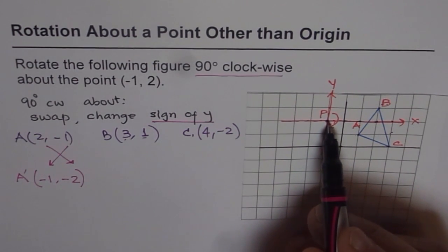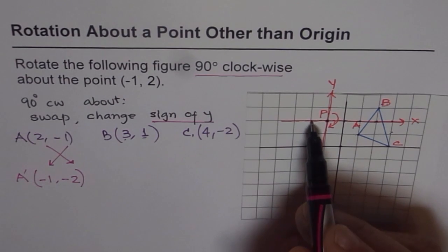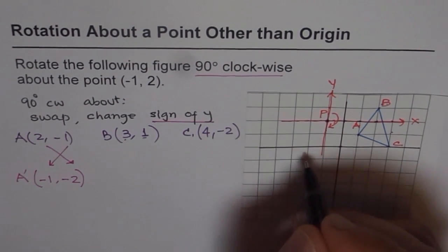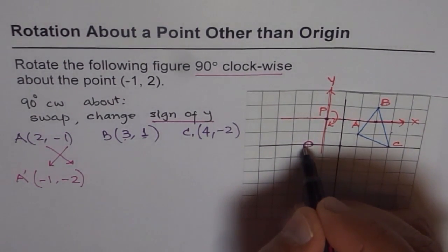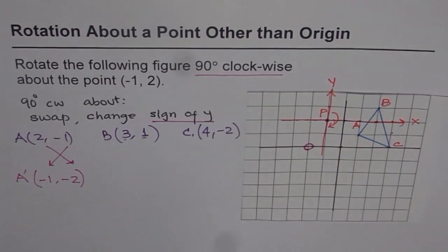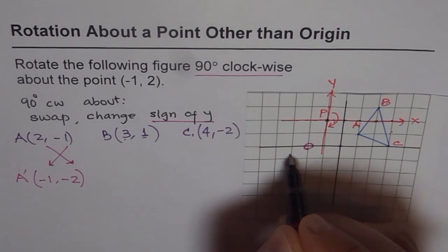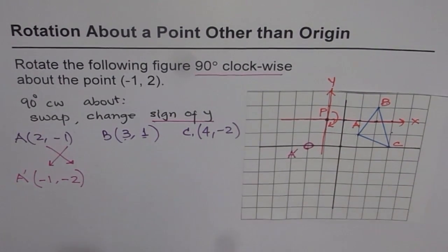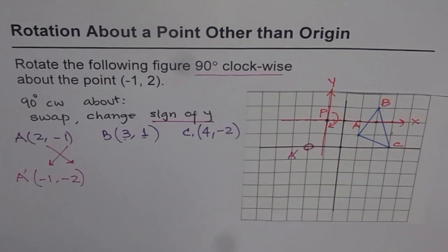So minus 1 is this side and minus 2 is 1, 2, right? So we get a point here. So that is our point which we will call as A', right? So this is A' for us. Minus 1 minus 2.